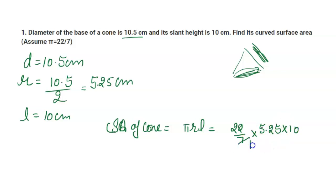Now simplifying, this equals 22 into 7.5. 5.25 into 10 is 7.5, so it equals 7.5 multiplied with 22.